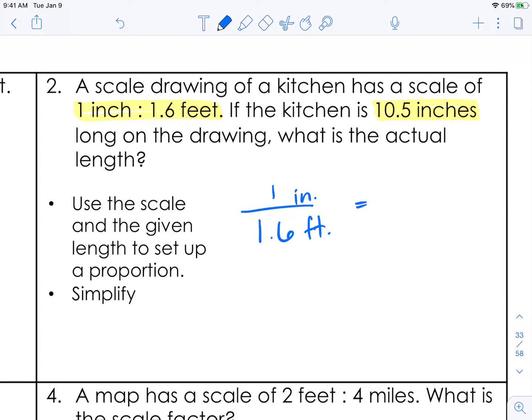We were given 10.5 inches. And we don't know the actual. So we'll cross multiply. Again 1 times x is just x. So when that happens you're going to end up with your answer right away. 10.5 times 1.6 is 16.8. So the actual length of this kitchen that the scale drawing was made off of is 16.8 feet.